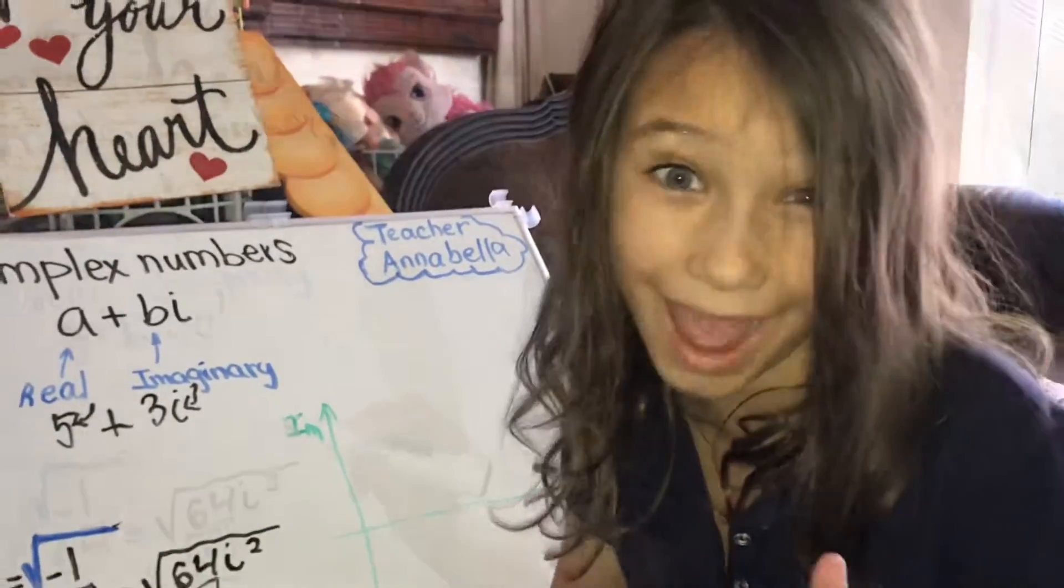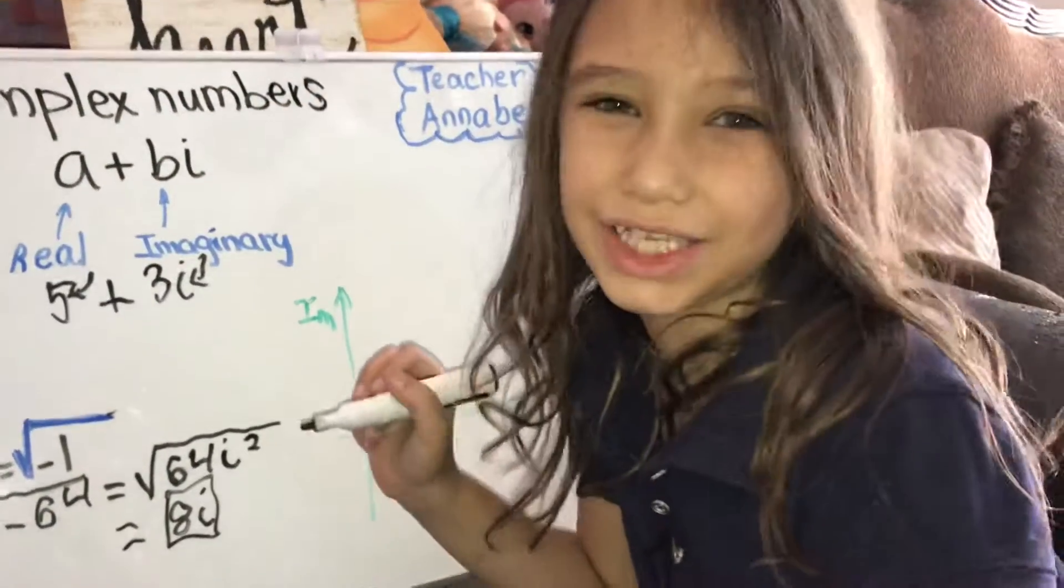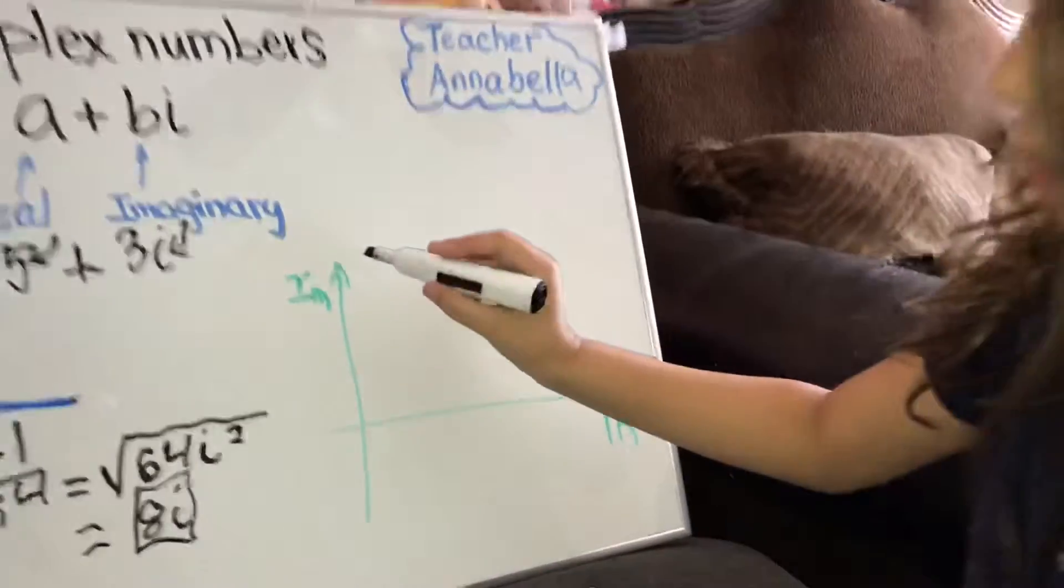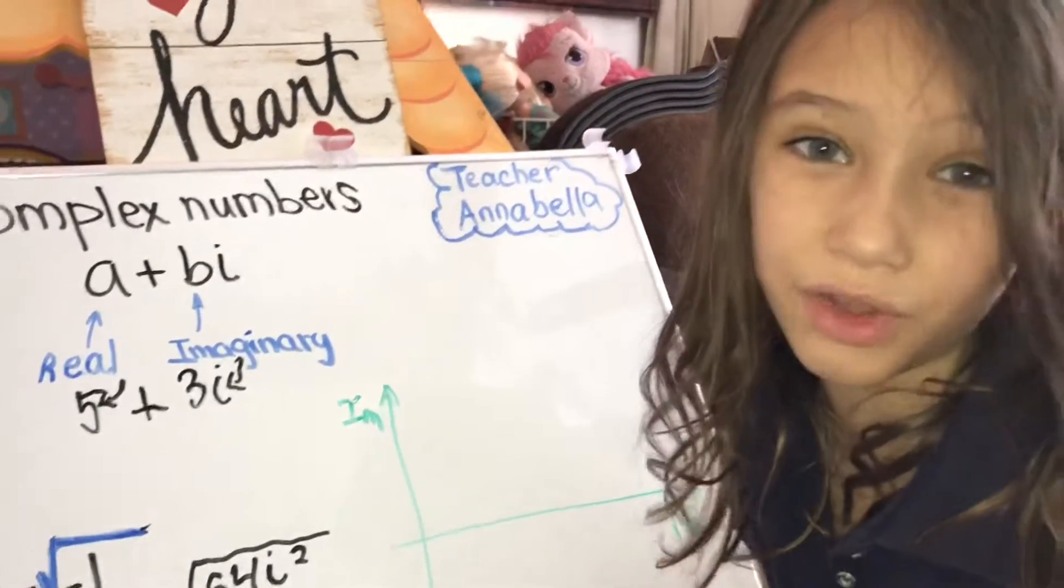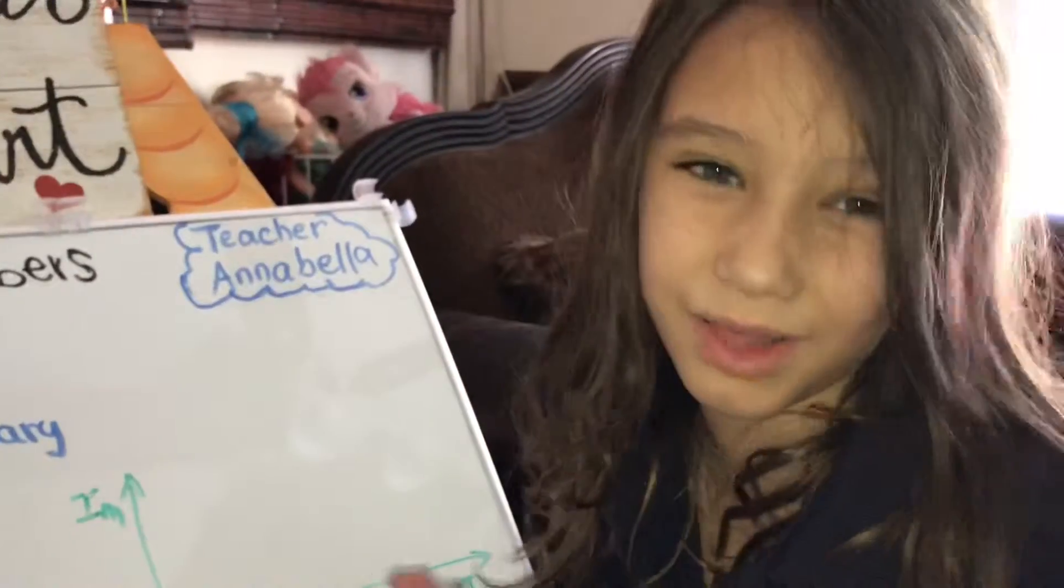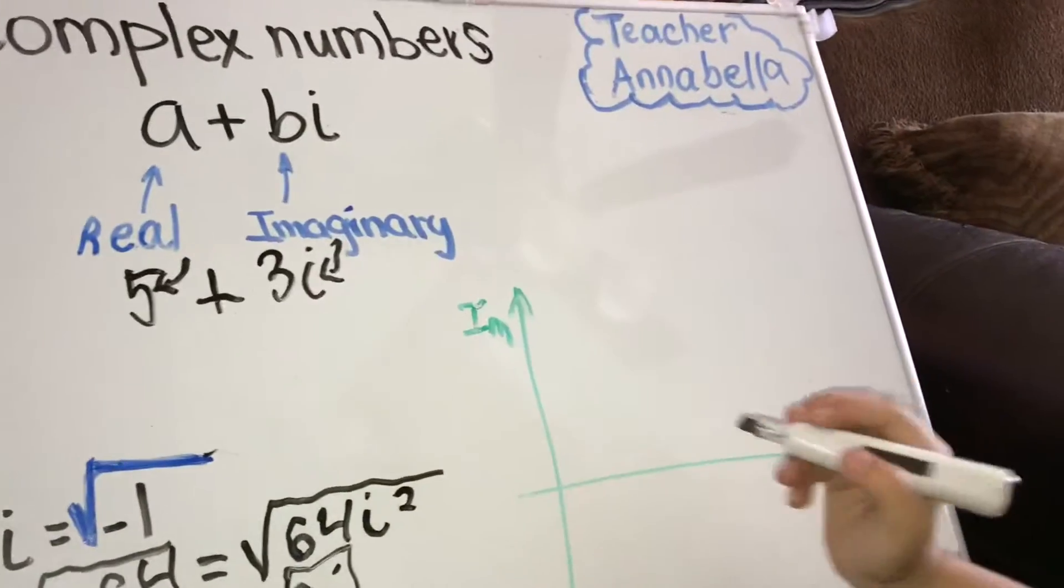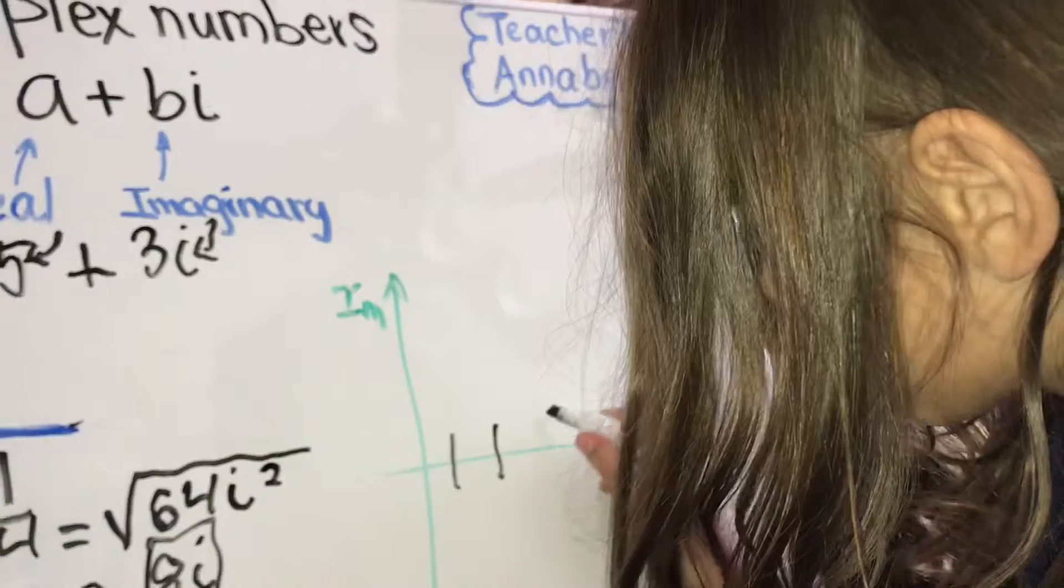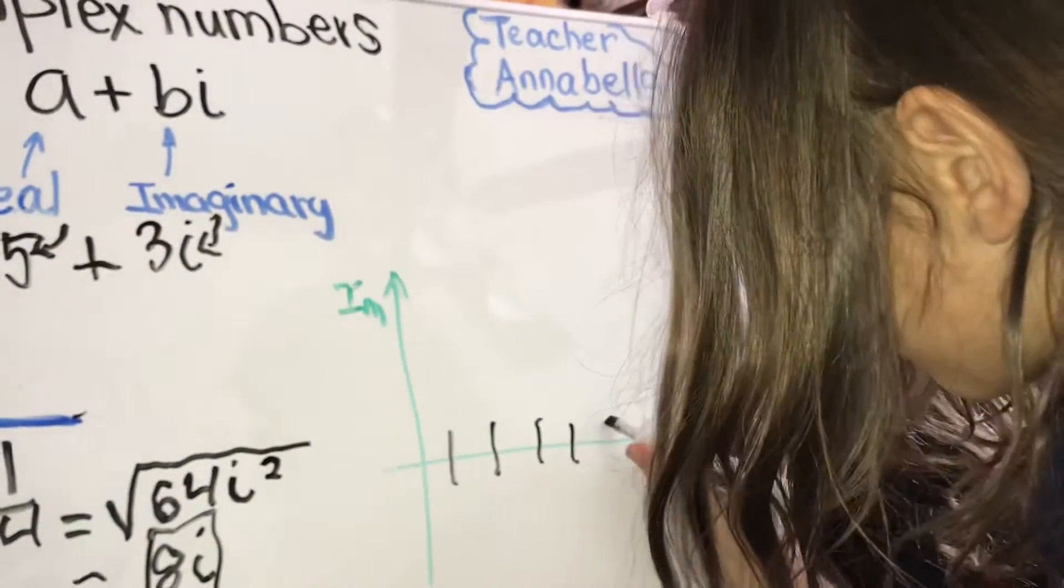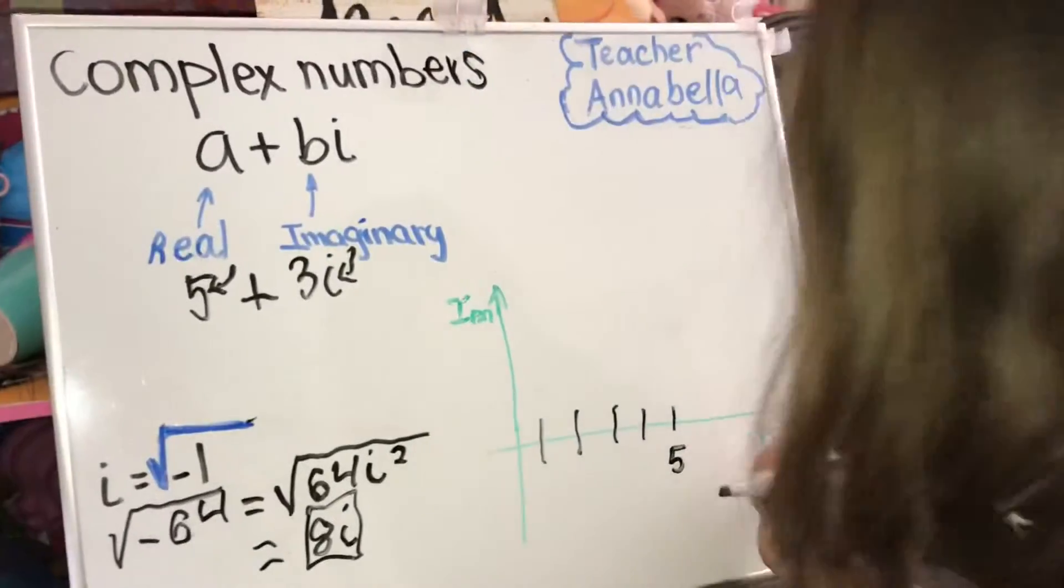But we can graph them. I M stands for imaginary. So the R with the line is the symbol for real numbers. So our real numbers go there. Let's find the real number. Five is our real number, so we make five lines. Five.